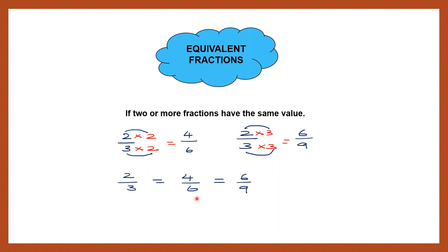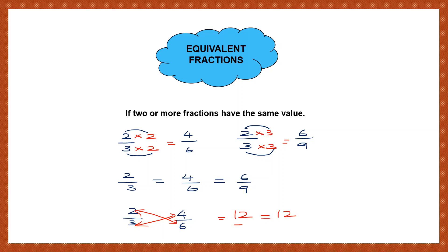Now, how do I know if two fractions are equivalent? I can check them. Let me take 2 by 3 and 4 by 6. To find out if they are equivalent, I can cross multiply. That is, I multiply this numerator and this denominator: 2 into 6 gives 12. Now I multiply 3 and 4: three 4s are 12. The answers are the same — 12 and 12 — which means they are equal fractions or equivalent fractions.